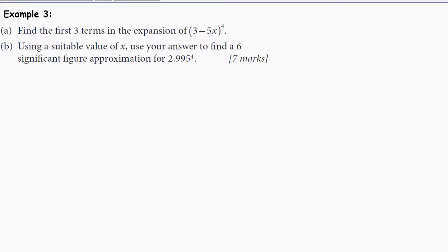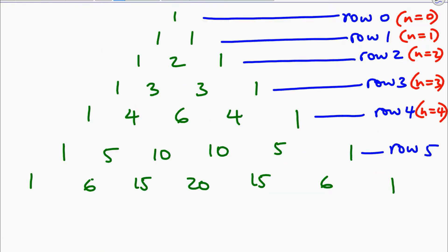So let's start with the first part. In part A, we just need to find the expansion of (3 - 5x)^4. We shall use Pascal's triangle. The binomial coefficients are these ones here, because n equals 4.